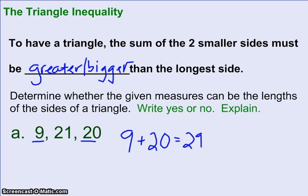So it says the sum of the two smaller sides has to be bigger or greater than the longest side. Well, the longest side was 21. So is the sum of my smaller sides bigger than 21? Yes, it is. 29 is definitely bigger than 21. So you could say yes, these three side lengths could be put together to make a triangle.